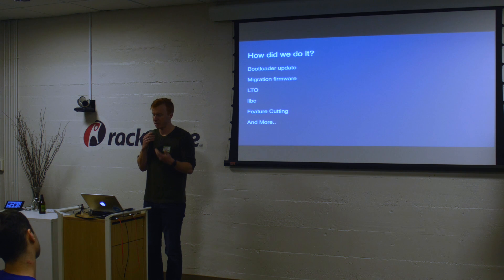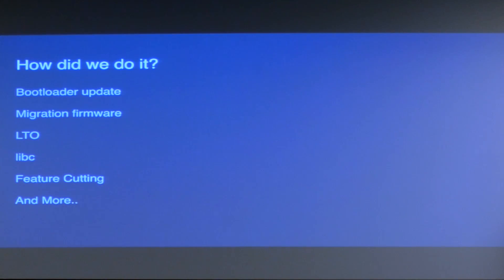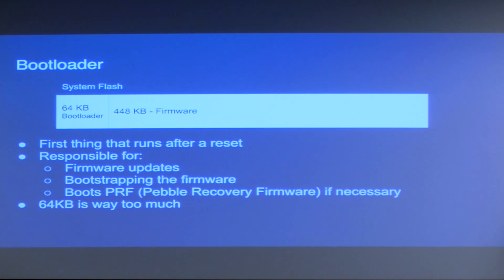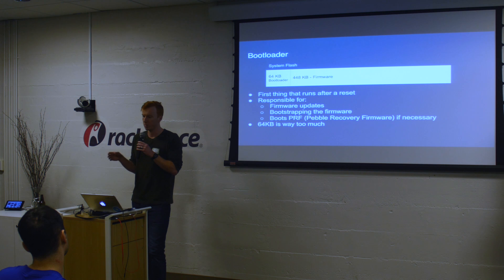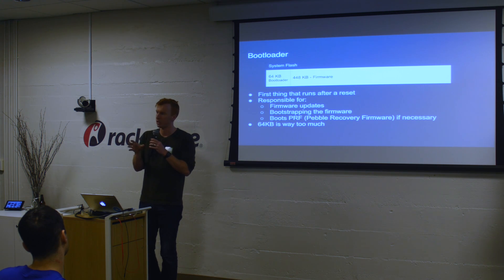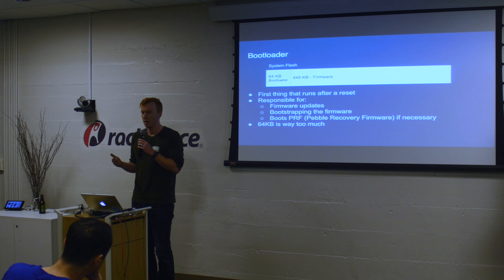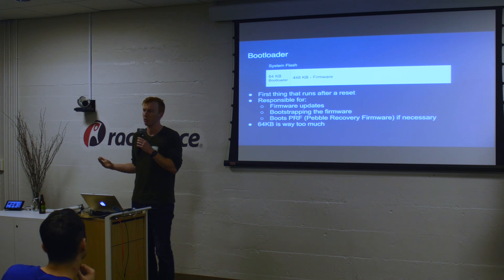So how do we do it? There are a bunch of different parts, and I'll go into each one. First, the bootloader. The bootloader lives in the system flash of the chip — in our Pebble products, about 512K split up roughly as 64K for the bootloader and 448K for the firmware. The bootloader is imaged at the factory and never changes. It's the very first thing that runs whenever you reset or power on a watch, responsible for booting the firmware, doing firmware updates, or booting our recovery firmware — which you're probably familiar with if your watch has ever died on you.